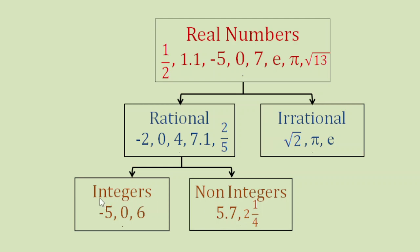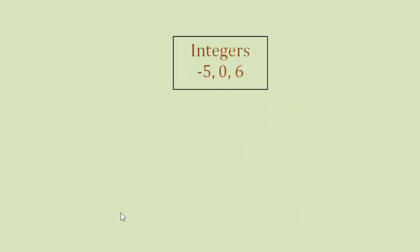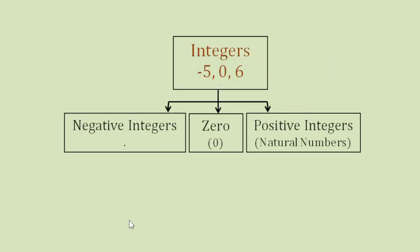Examples of integers: negative 5, 0, and 6. These integers can be classified into three: negative integers, 0, and positive integers. So we can say that negative integers, 0, and positive integers are subsets of integers.